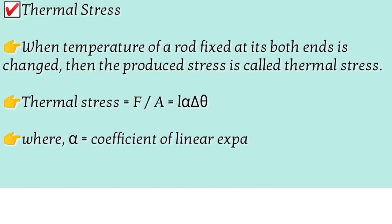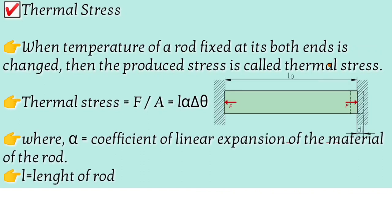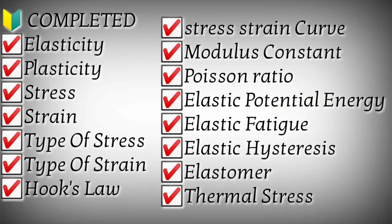Thermal stress: suppose you have a rod of length L fixed between two blocks. When you heat the rod, it would normally expand due to thermal expansion, but since it is fixed, it cannot expand — this produces a stress called thermal stress. Its formula is: thermal stress = Y · alpha · delta theta, where alpha is the coefficient of linear expansion of the material and delta theta is the change in temperature.